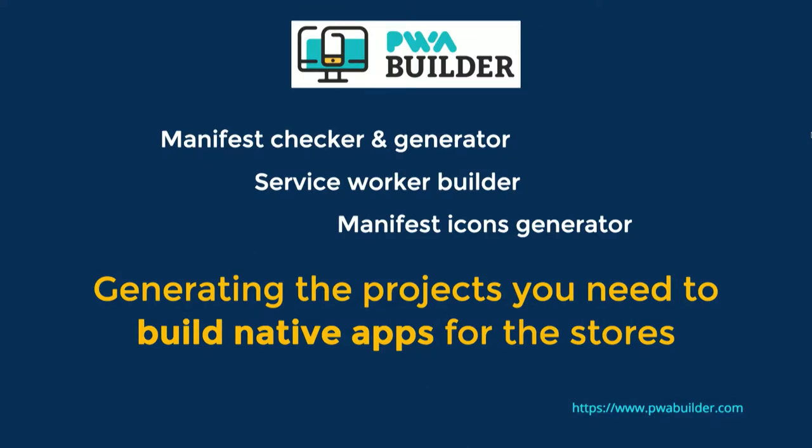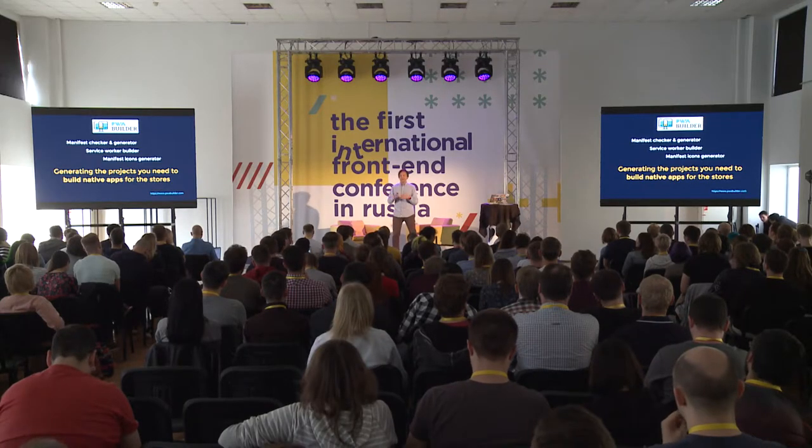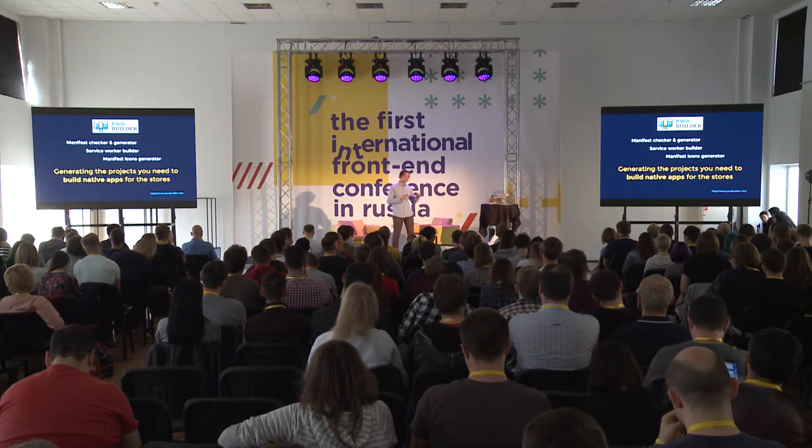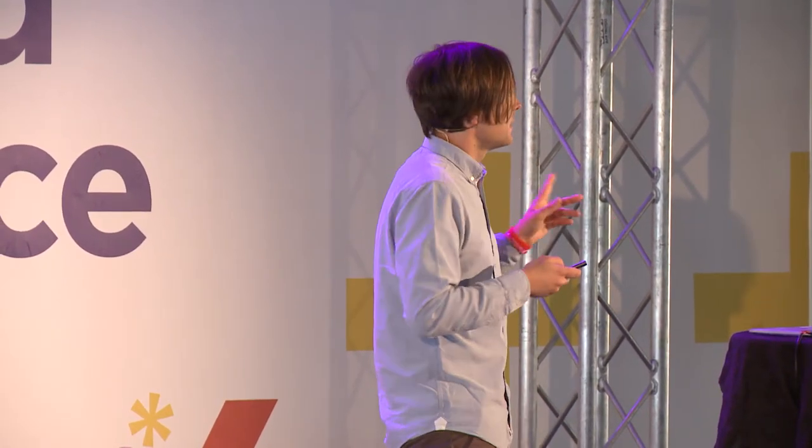PWA Builder's killer feature is this: you just provide a URL of your Progressive Web App, and it generates a native project for you. If you need some functionality not yet available on the web platform in a specific browser or operating system, you just get your project for Android Studio or for Xcode — it generates an already-ready app for Windows Store — and you just compile it and push it to the App Store. And this is not just theory. There is a really cool article about how to do this in reality.